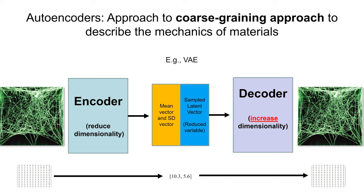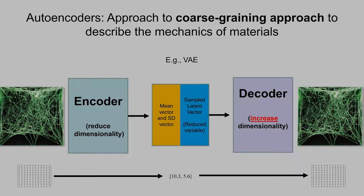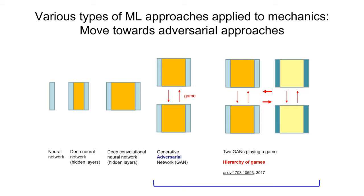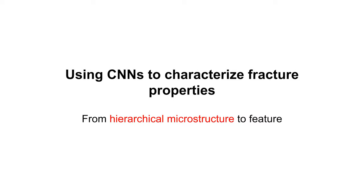Think about a spider web — we can encode critical information using variational autoencoders in a reduced set of variables and then decode the information in a design paradigm. We can design new kinds of spider webs, new kinds of bone microstructures. You can think about a family of different machine learning methods now emerging in materials design and manufacturing, ranging from traditional artificial neural networks to deep convolutional neural networks, to GANs — generative adversarial models that have multiple neural networks playing games with each other — to having multiple GANs playing games with each other.